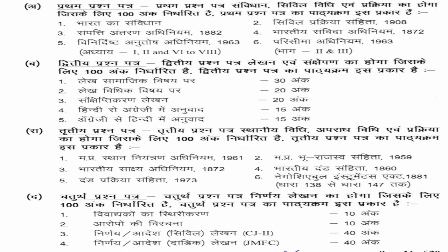Mains का पहला paper 100 marks का होता है, जिसमें IPC, CPC, Transfer of Property, Contract, Limitation, और Specific Relief Act — इन 6 subjects को मिलाकर एक written paper बनता है। दूसरा paper भी 100 marks का होता है, जिसमें essays लिखने पड़ते हैं, paragraphs और translations होते हैं। सामाजिक विषय पर essay 30 marks, विधिक विषय पर essay 20 marks, paragraph writing 20 marks, और Hindi to English तथा English to Hindi translation 10-10 marks — total 100 marks।